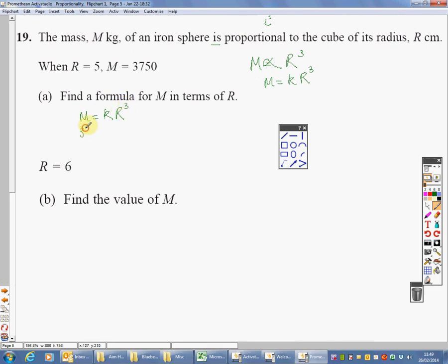So, 3750 equals K times 5 cubed. Well, 5 cubed is 5 times 5 is 25 times 5 is 125. So, 3750 equals K times 125. To get K by itself, I need to divide by the 125 on this side. Well, both sides effectively. And 3750 divided by 125 is 30. So, K equals 30.